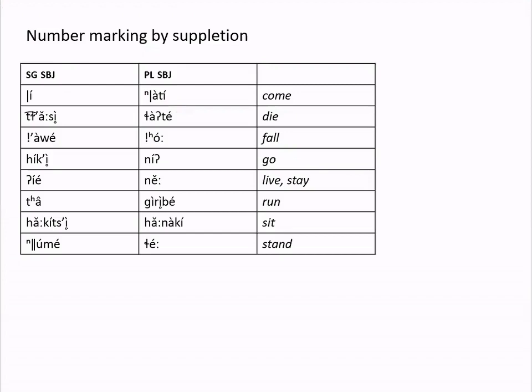Let's start by looking at the use of suppletion for number marking in verb stems in Sandawe. In intransitive verbs like these, there is a singular stem and a plural stem, with the number marking referring to the subject. For example, we have one meaning for 'come' when the subject is singular and a different form when the subject is plural. Not all intransitive verbs have this distinction — 'may' meaning 'enter' or 'hanga' meaning 'leave' have the same stem for singular and plural subject — but these are examples of those that have two stems.